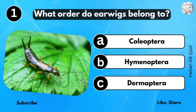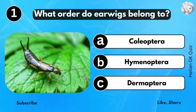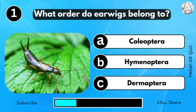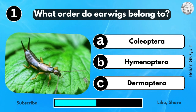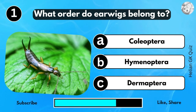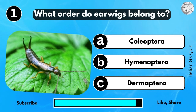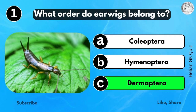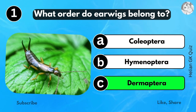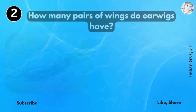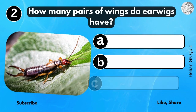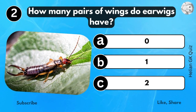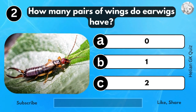What order do earwigs belong to? Dermoptera. How many pairs of wings do earwigs have?